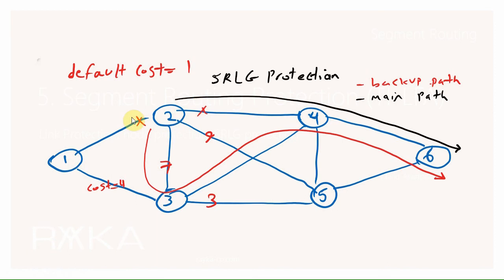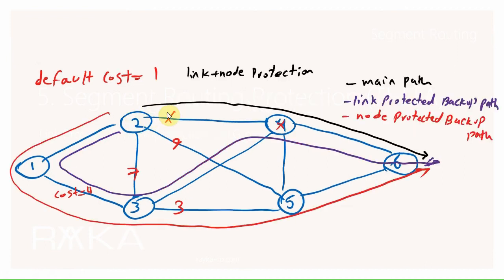Currently, SRLG only supports local links. That means, for example, if the R2–R4 and R3–R4 links are in the same SRLG, we cannot implement SRLG protection in router R2 because the R3–R4 link is not local to router R2.